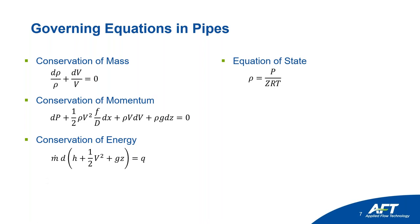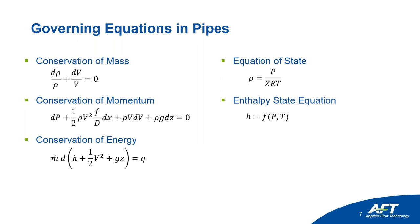Density changes with temperature and pressure, which changes velocity, which changes pressure drop, which changes energy throughout the system — you can see how coupled it is. We also have enthalpy as a function of pressure and temperature, which fits into the energy equation. So we've got five equations — conservation of mass, momentum, energy, equation of state, and enthalpy — that we need to couple together and solve for.